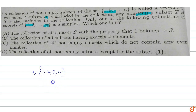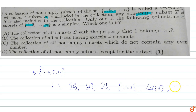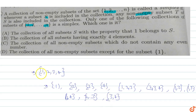The subsets are {1}, {2}, {3}, {4}, {1,2}, {1,3}, {1,4}, {2,3}, {3,4}, {1,2,3}, {1,3,4}, and so on. All subsets are included in this set, so we can say that this is a simplex set.